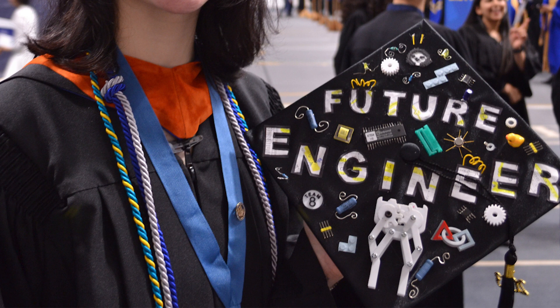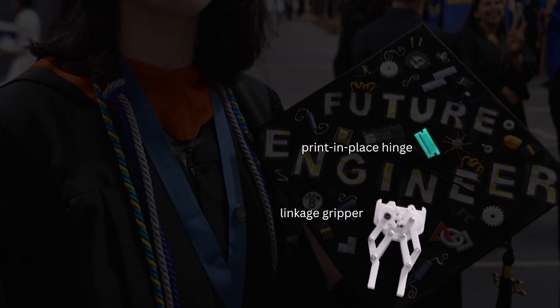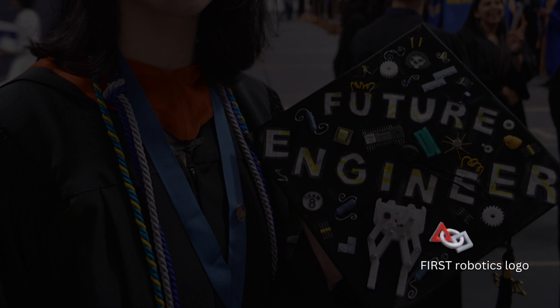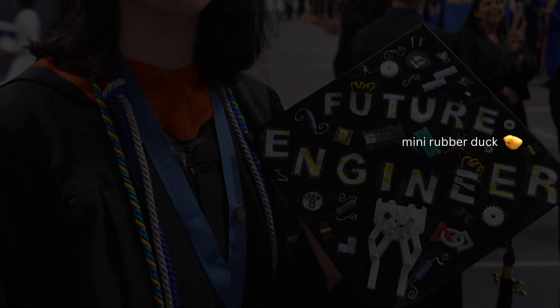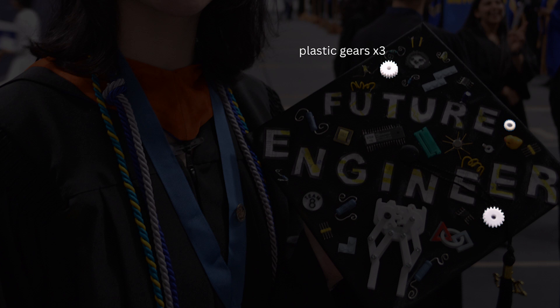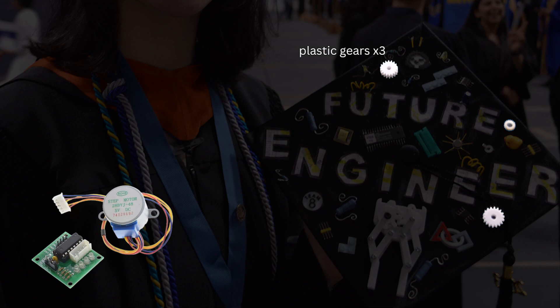Every little doodad on this cap has a meaning, symbolizing some kind of event or experience that was influential during my undergrad years. The gripper and print-and-place hinge pay homage to my undergrad research. I had to add the FIRST Robotics logo since high school robotics heavily influenced my choice to pursue engineering, and I enjoy volunteering at events when I can. The rubber duck is because I got a minor in computer science. These small gears are a shout out to my first DIY gearbox I made trying to increase the torque on a stepper motor for a gripper project.